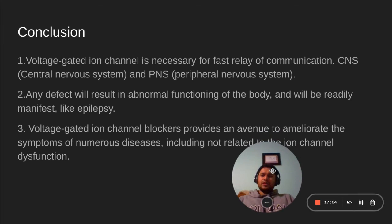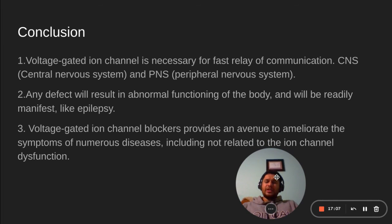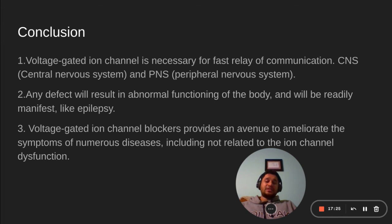In conclusion, voltage-gated ion channels are necessary for fast relay of communication — especially for the central nervous system and peripheral nervous system. Any defect will result in abnormal functioning of the body, readily manifest as conditions like epilepsy or extreme skin sensitivity to light touch due to sudden depolarization. Voltage-gated ion channel blockers provide an avenue to ameliorate symptoms of numerous diseases related to ion channel dysfunction.